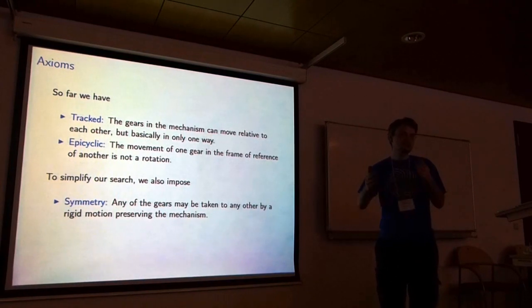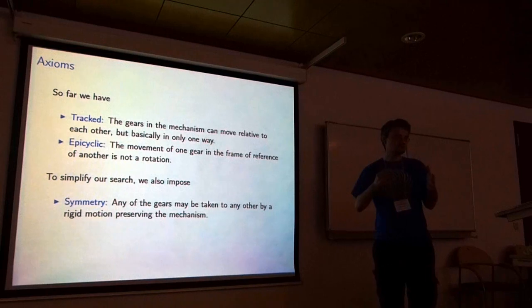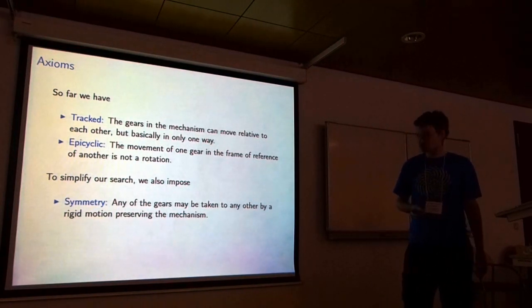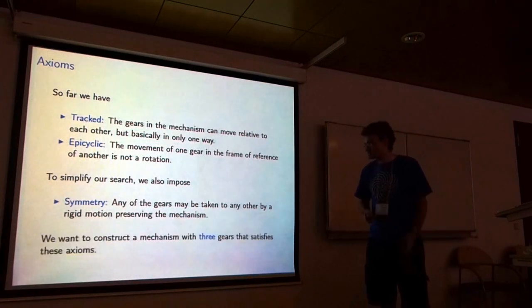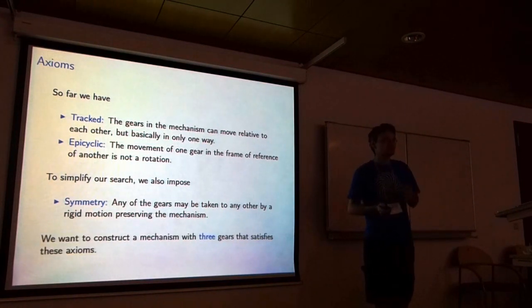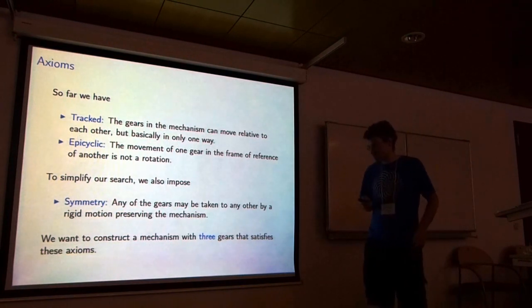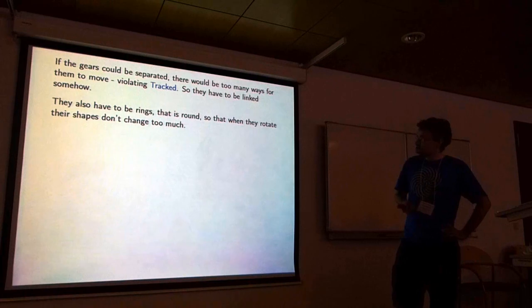This is really just to make our lives easier, as we'll see later on. If you've got a symmetry property, then the interaction between two gears, you only have to work that out once, and then you use the symmetry of the mechanism to move that around everywhere else to generate all the same. We want to construct the mechanism with three gears, three rigid bodies that are moving in space, that sanitize these axioms.